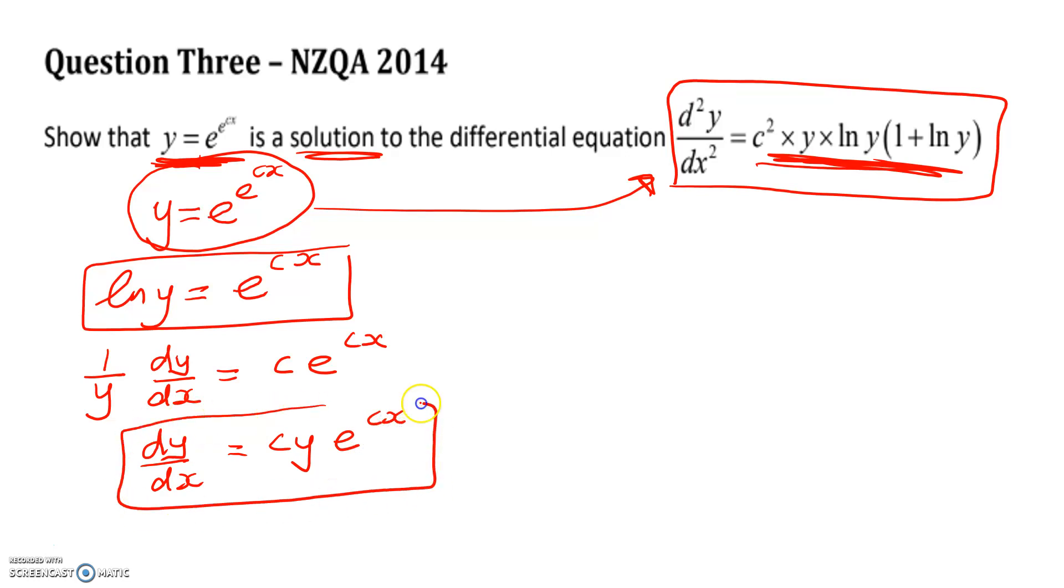Now, I could muck around with that more, but I'm not going to, because I know that I need to get the second derivative, and then show that it fits the thing up above. Let's see if I can squeeze this onto one slide. Okay, so the second derivative is going to require more implicit, but this time using the product rule.